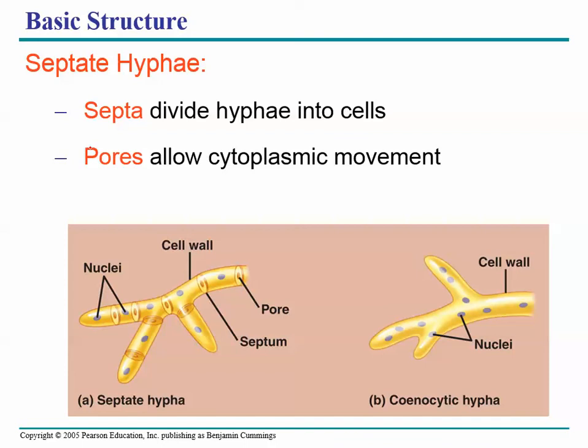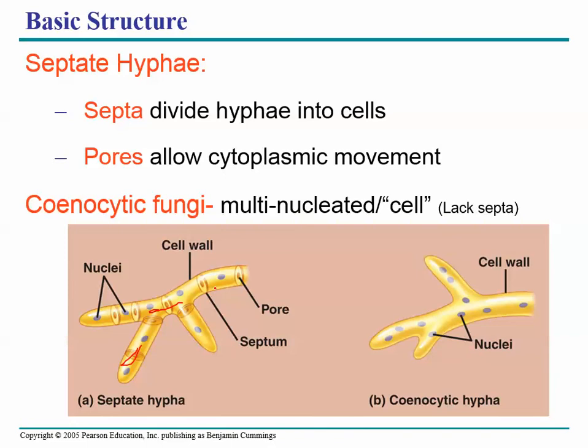Some hyphae don't even bother with partial walls — if you're going to have cytoplasmic movement, why have walls at all? These hyphae are called coenocytic. Here is an example of a coenocytic hyphae — notice there's no cell wall between the nuclei. What you have is basically a multinucleated cell.